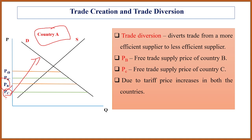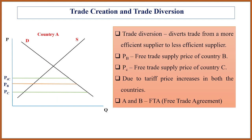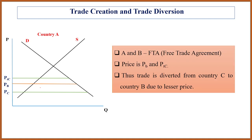Now there is an increase in price in both countries. Suppose Country B agrees to a free trade agreement and reduces its tariff — now Country B's price is PB while Country C's price remains PTC, since Country C has not reduced its tariff. What happens is that trade is now done with Country B because its price is lower. This is called trade diversion — diverting trade from a more efficient supplier to a less efficient supplier.